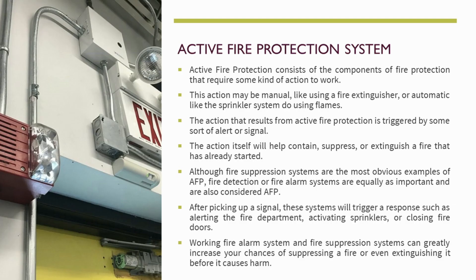Active fire protection consists of components that require some kind of action to work. This action may be manual — like using a fire extinguisher — or automatic, like a sprinkler system. The action that results from active fire protection is triggered by some sort of alert or signal, and will contain, suppress, or extinguish a fire that has already started.